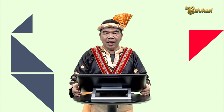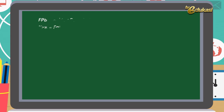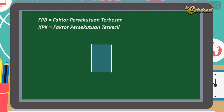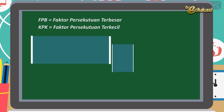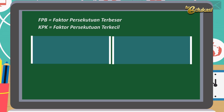Baik anak-anak, Bapak akan menjelaskan pemahaman konsep tentang KPK dan FPB. Perhatikan penjelasan berikut. Kalian tentu sudah memahami konsep FPB, KPK, dan penggunaan faktorisasi prima. Saat ini, kita akan menghitung FPB dan KPK dengan menggunakan faktorisasi prima. Perhatikan bilangan di bawah ini.